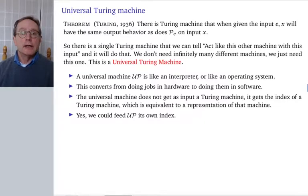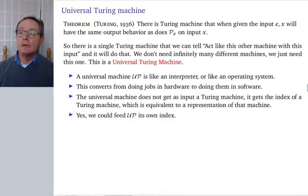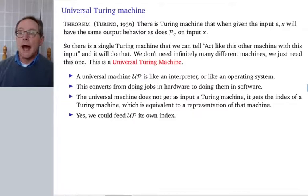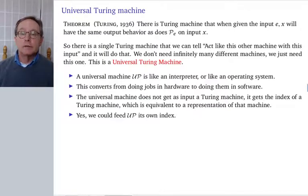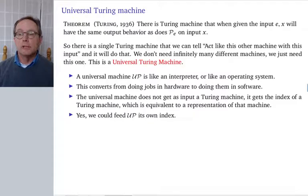Turing was the first to show in great detail how to do that. There is a single program that, when given input E and X, will have the same output behavior as Turing machine E on input X. That's called the Universal Turing Machine. We don't need infinitely many machines, we don't need a back room — we just need this one. I write it as φ for the Universal Turing Machine, but it's just a symbol.